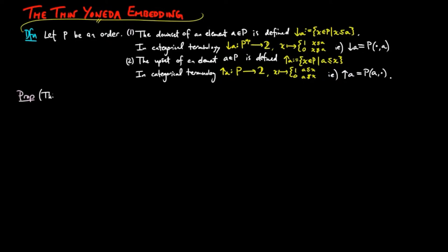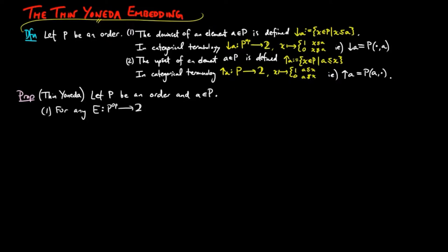Then we have the following results. Let p be an order and a an element in p. One: for any down-directed set e, which is equivalent to a functor from p^op to 2, the lower segment on a is less than or equal to e in the thin functor category of p^op to 2, if and only if a is in e.